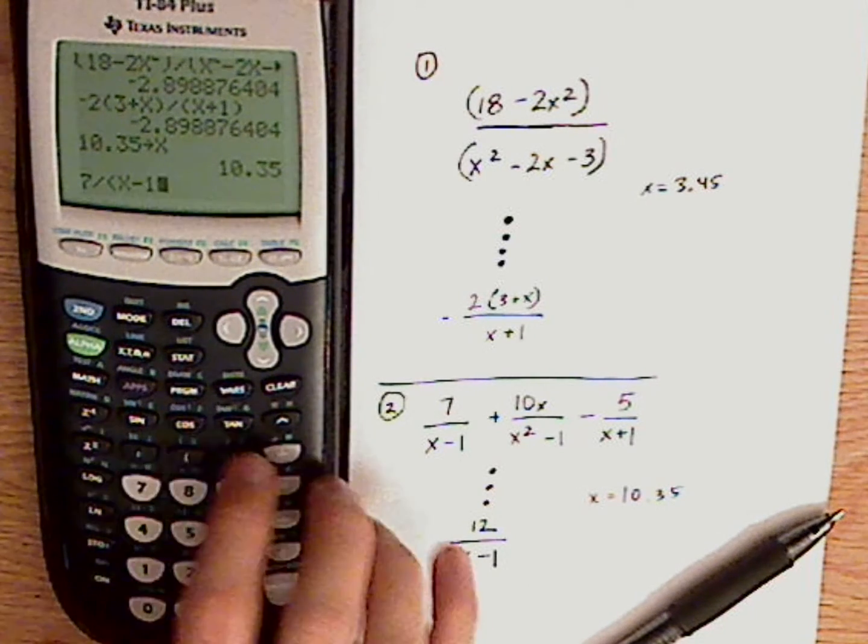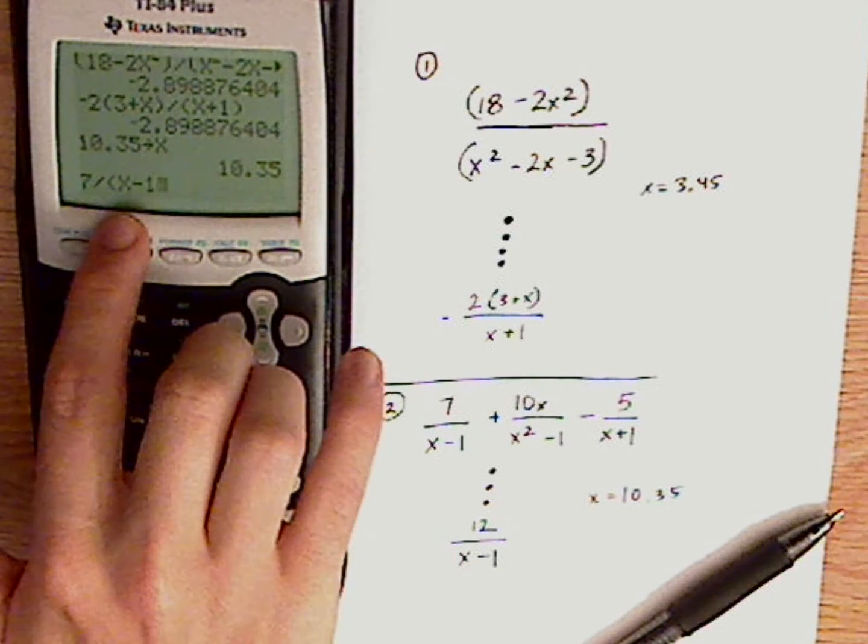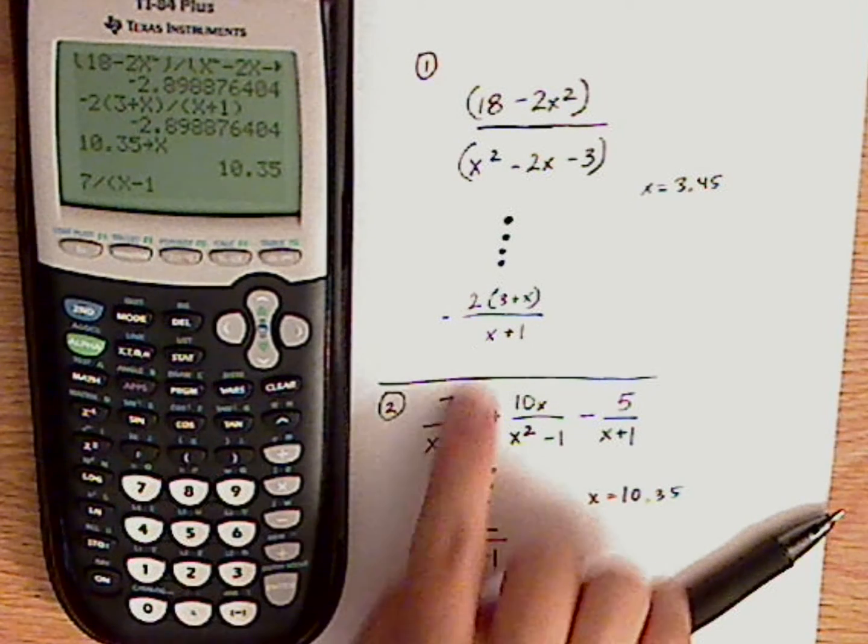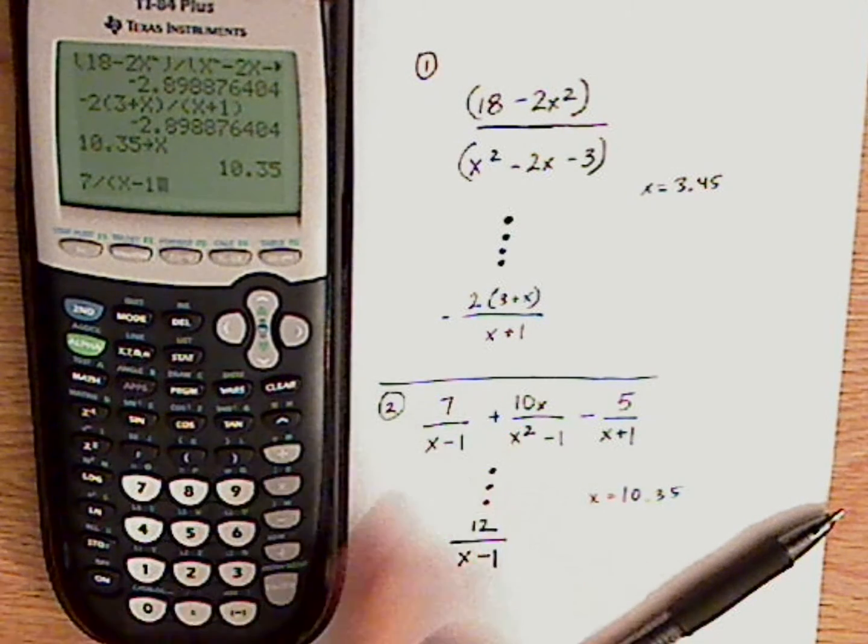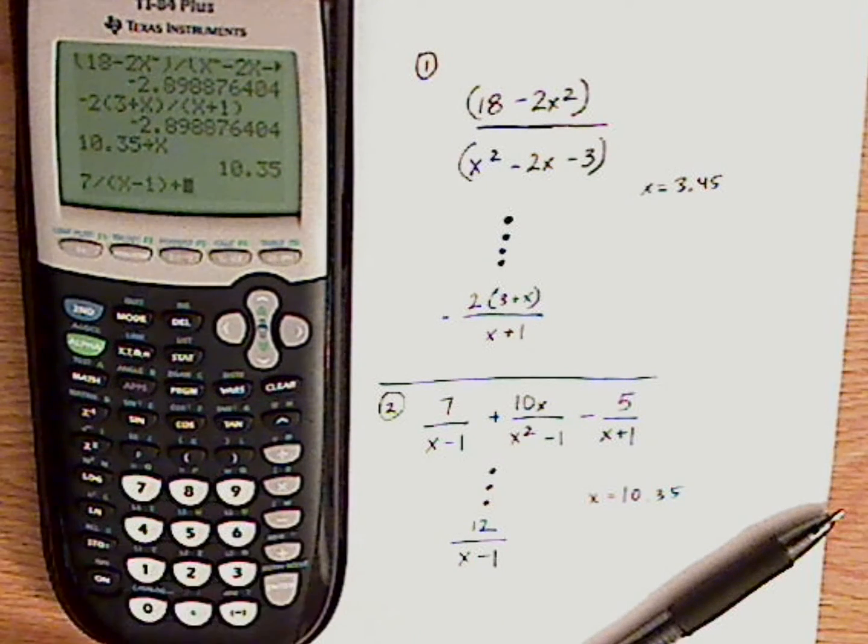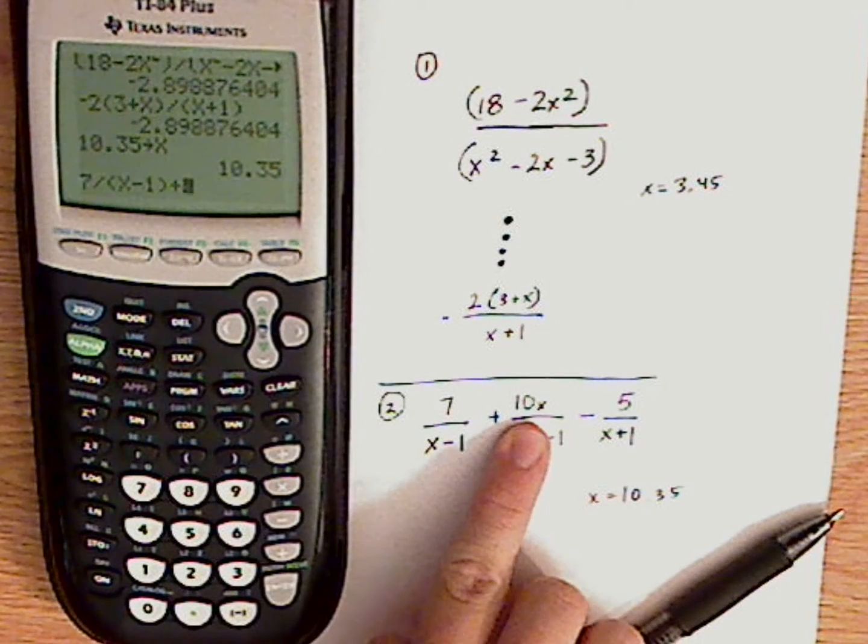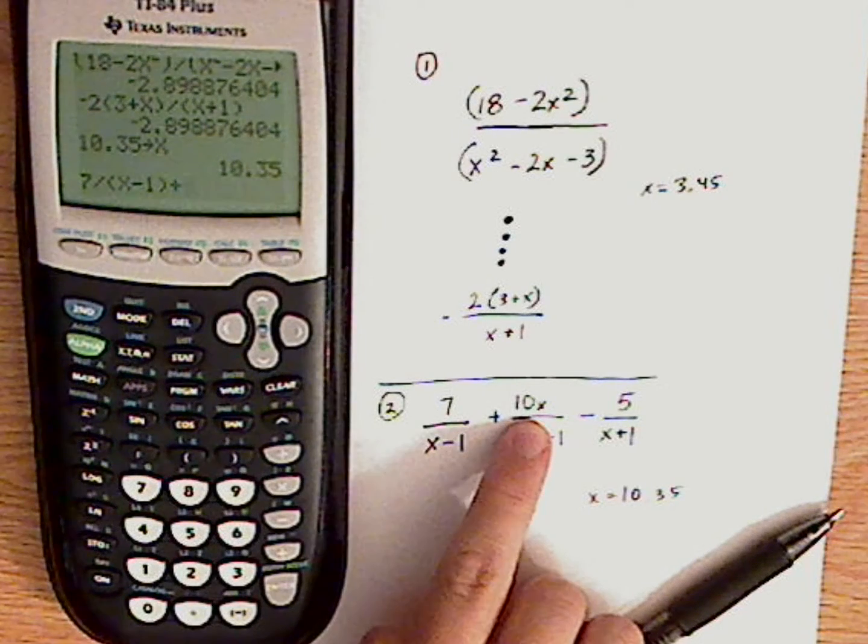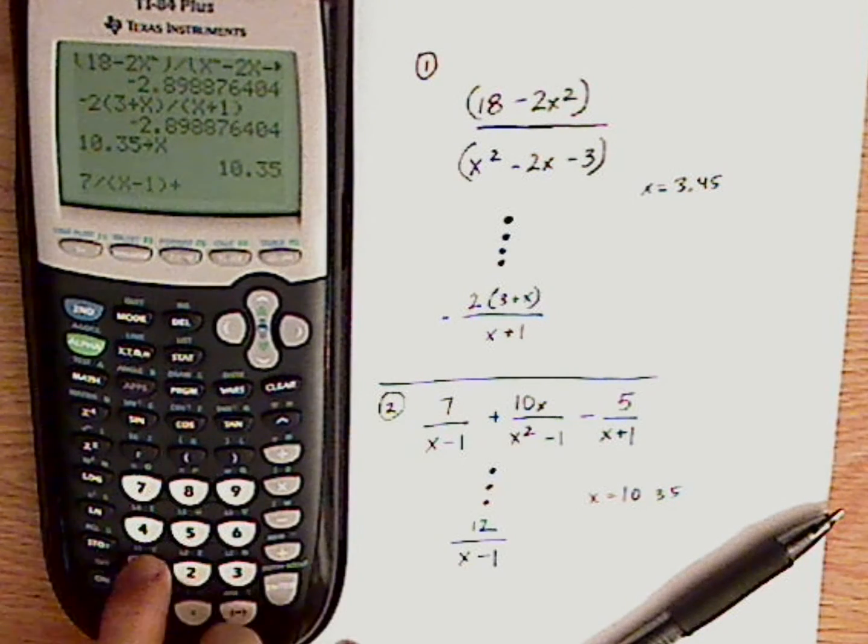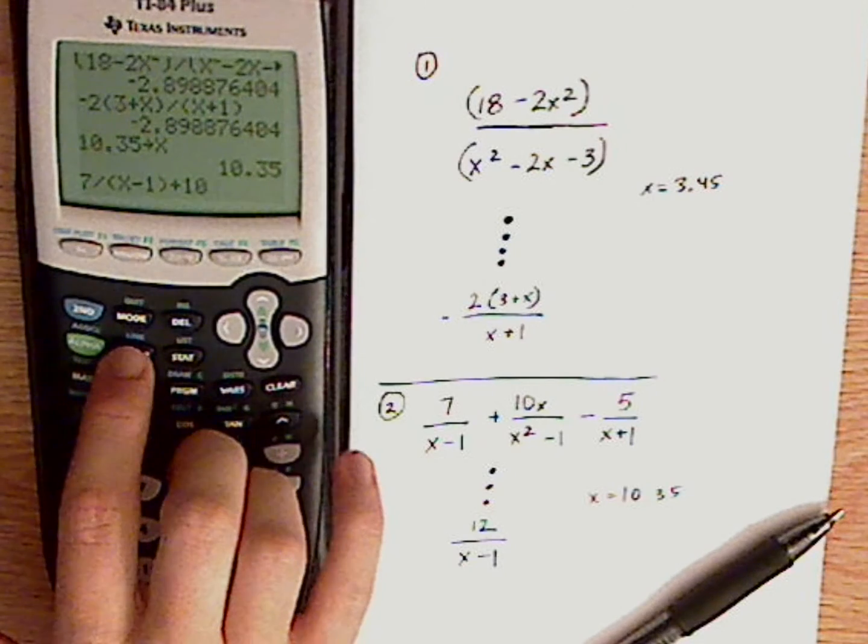what will happen is it will divide it by x, and then it will subtract 7 over x by 1, the whole thing. So that's why I need the parentheses around that. Plus, here, since it's just a monomial, I don't necessarily need parentheses there for the numerator. So I'm just going to type in 10x divided by.